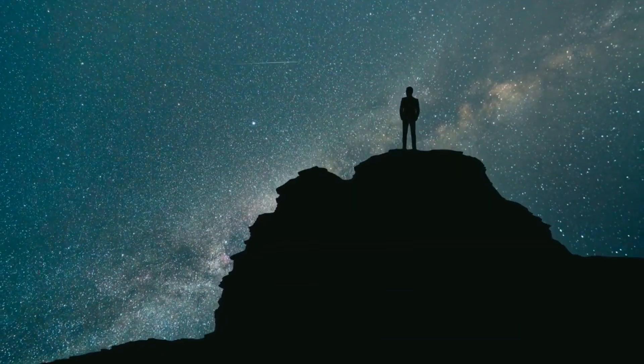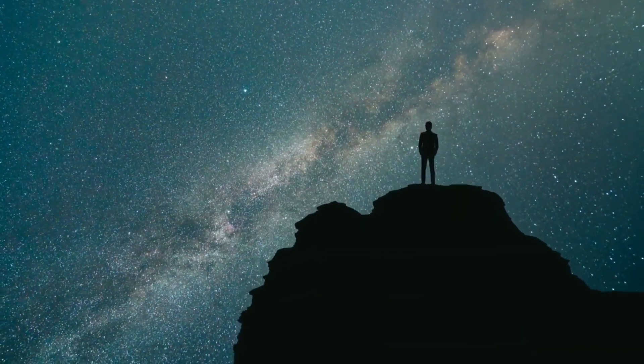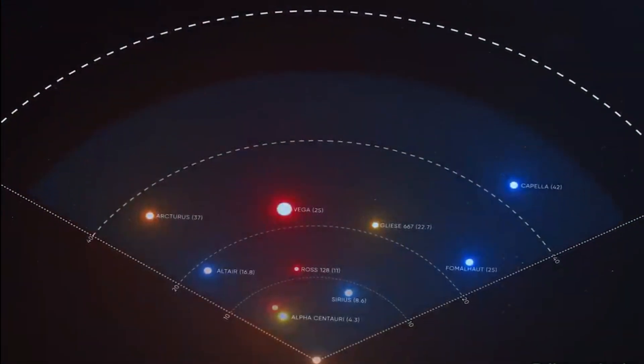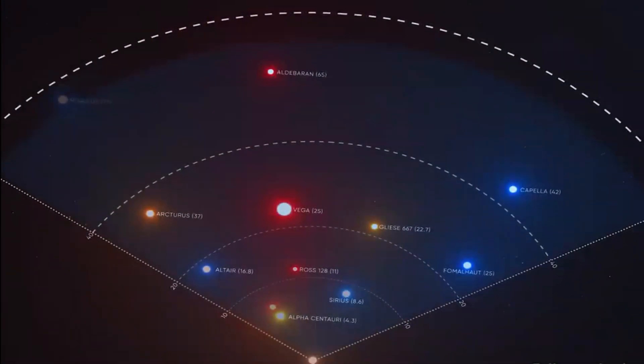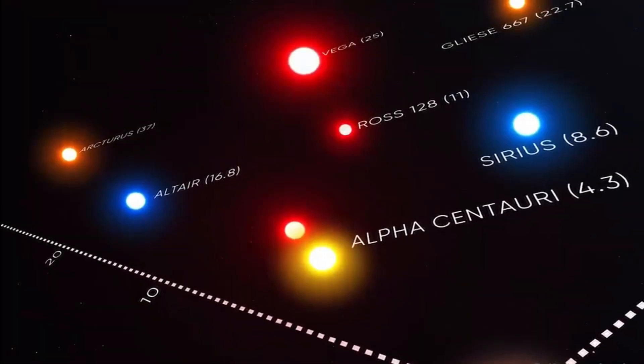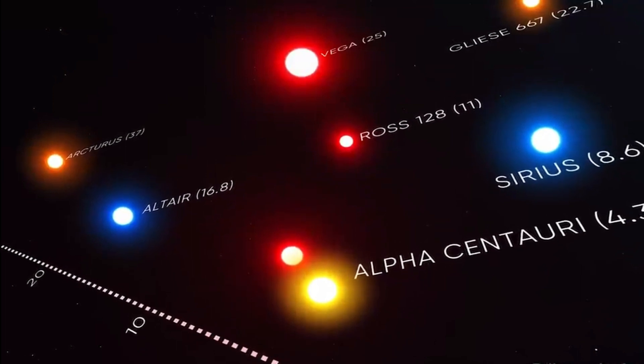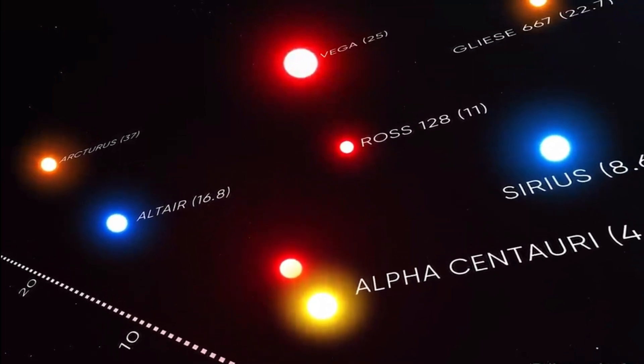If we hope to someday make contact with life around another star, there's no better place to look than at worlds around Proxima Centauri, the nearest star to our Sun. Astronomers had already detected two exoplanets orbiting our closest stellar neighbor, which is only 4.2 light-years away.